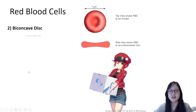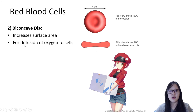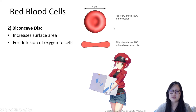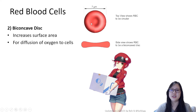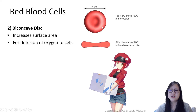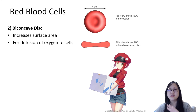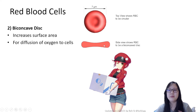Red blood cells have a biconcave disc shape, which increases surface area for diffusion of oxygen to cells. However, when viewing a micrograph from the top, the biconcave shape is hard to distinguish — it looks circular. You need a side view to see the biconcave shape clearly, so be careful when writing answers referring to a figure: describe only what you can actually see.